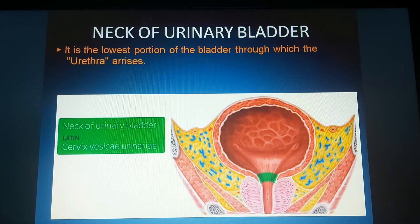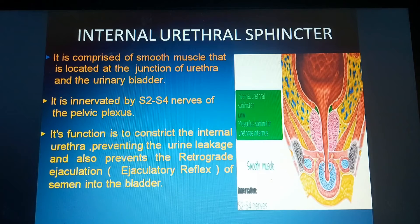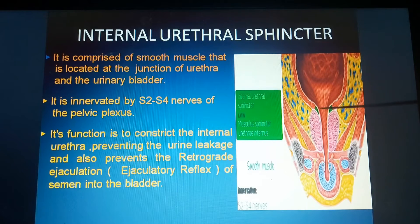Coming to the neck of the urinary bladder — it is the lowest portion of the bladder through which the urethra arises. The internal urethral sphincter is comprised of smooth muscle located at the junction of the urethra and the urinary bladder.